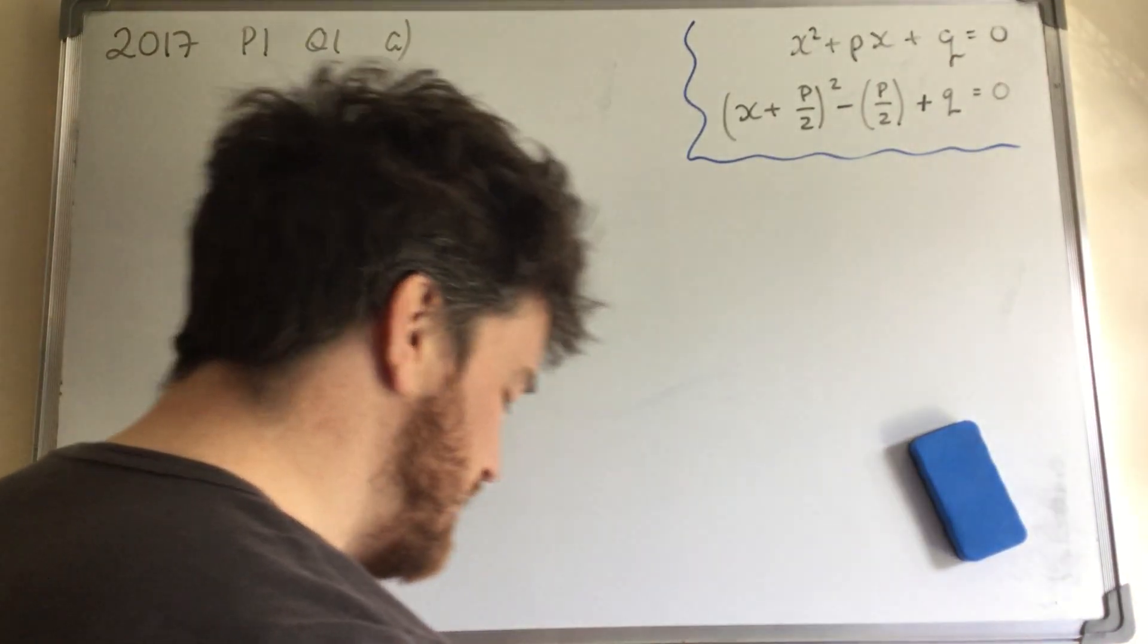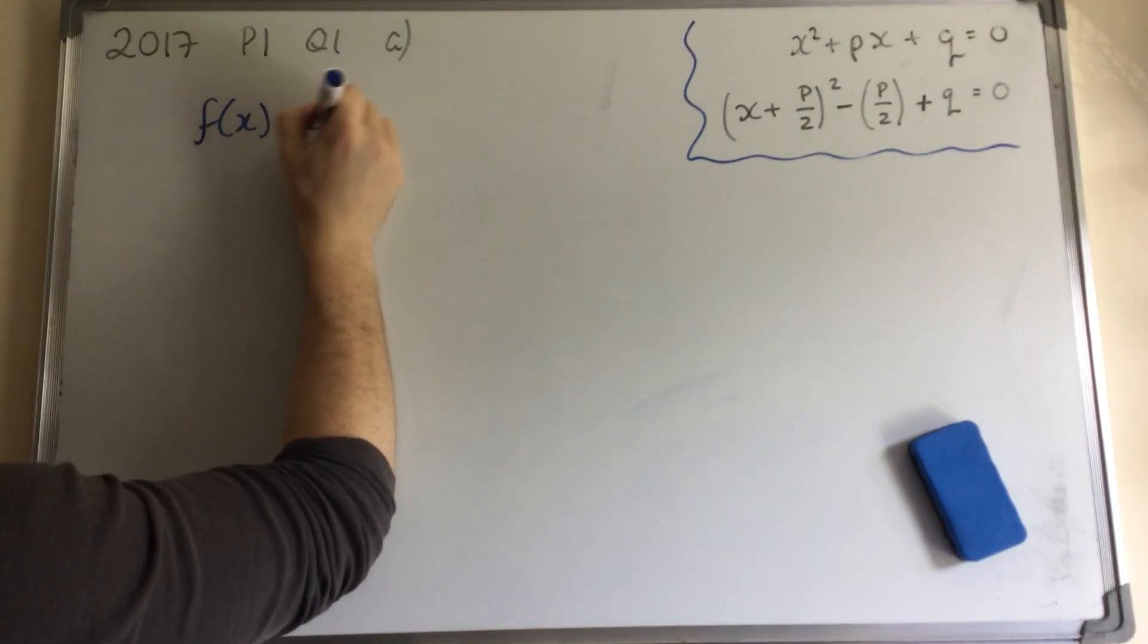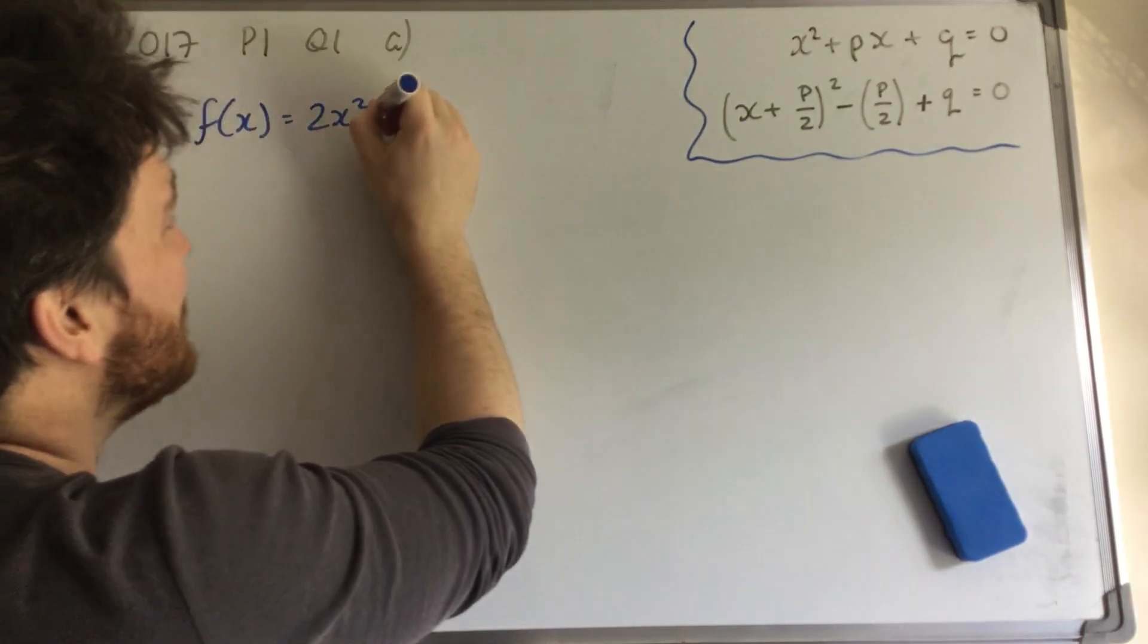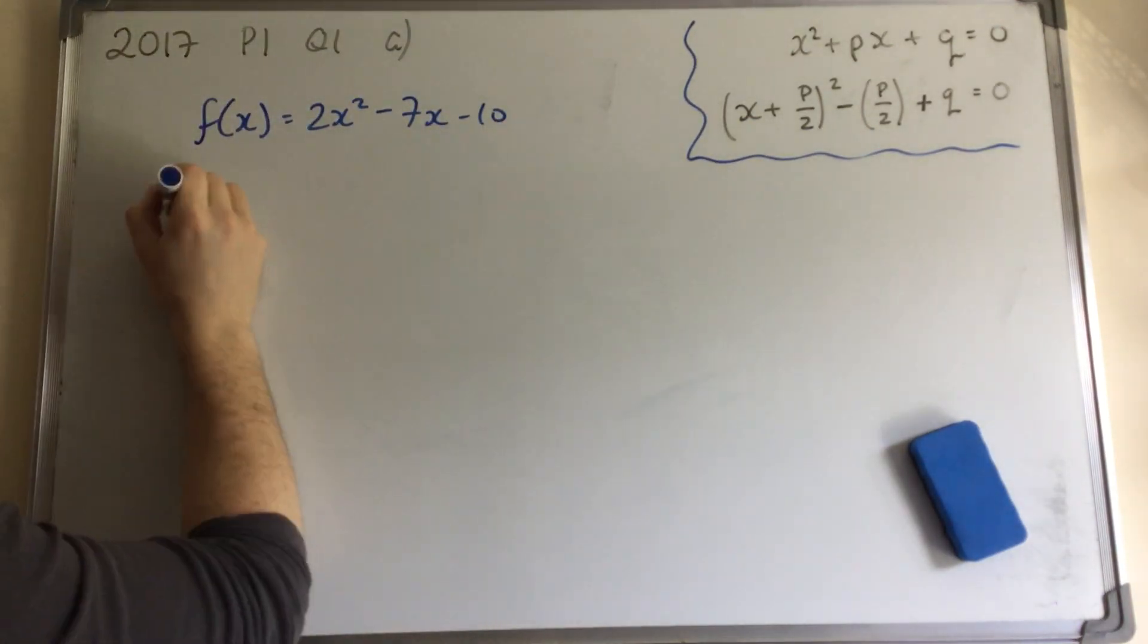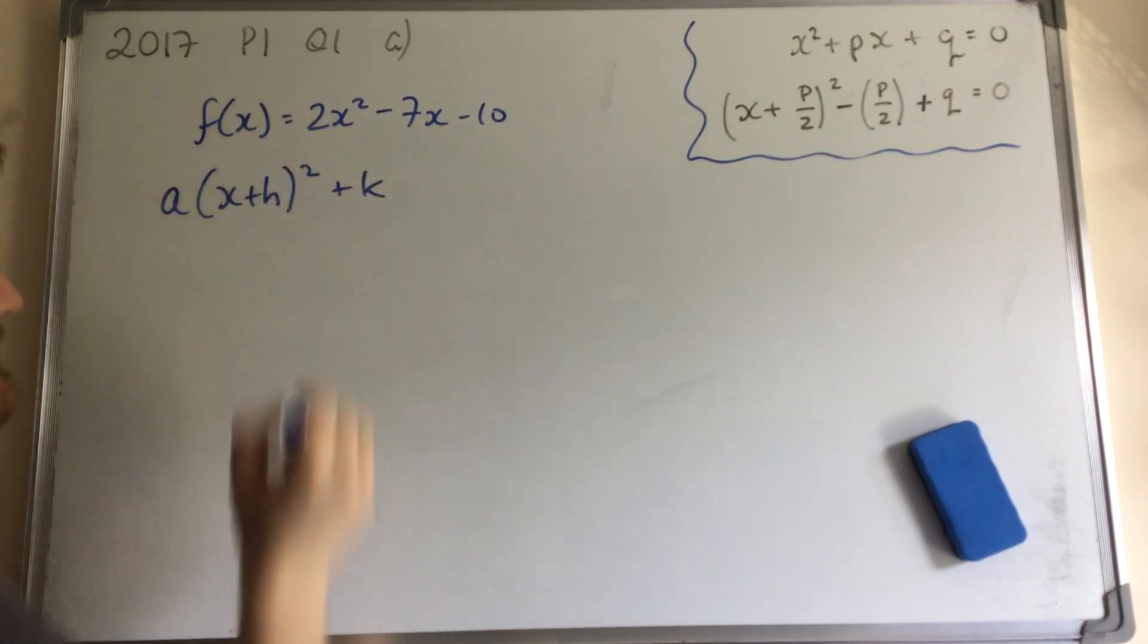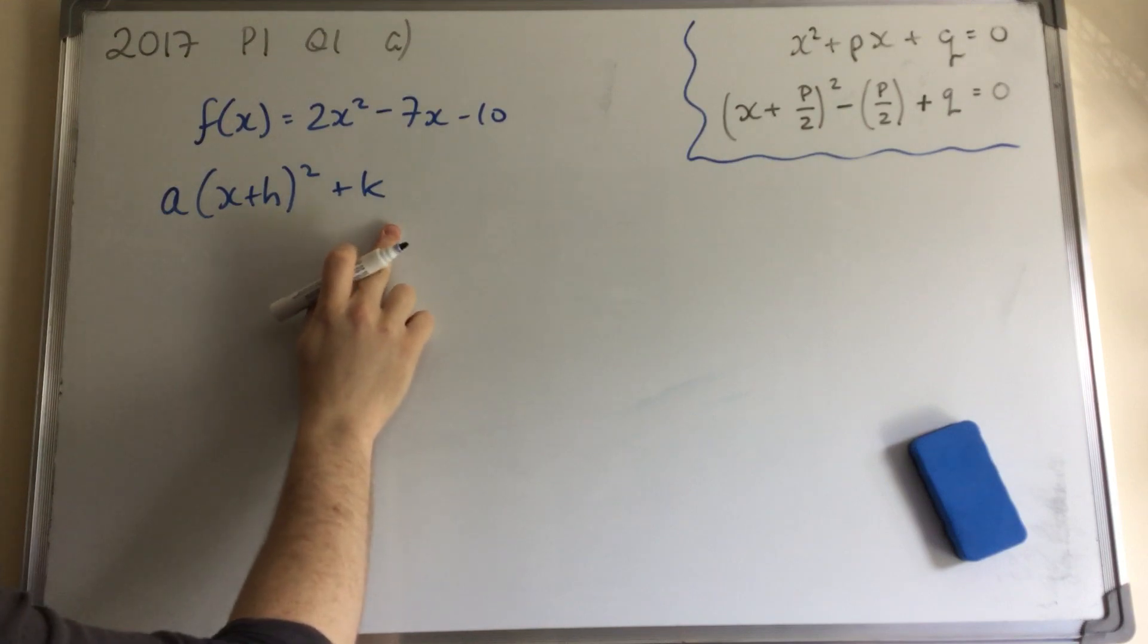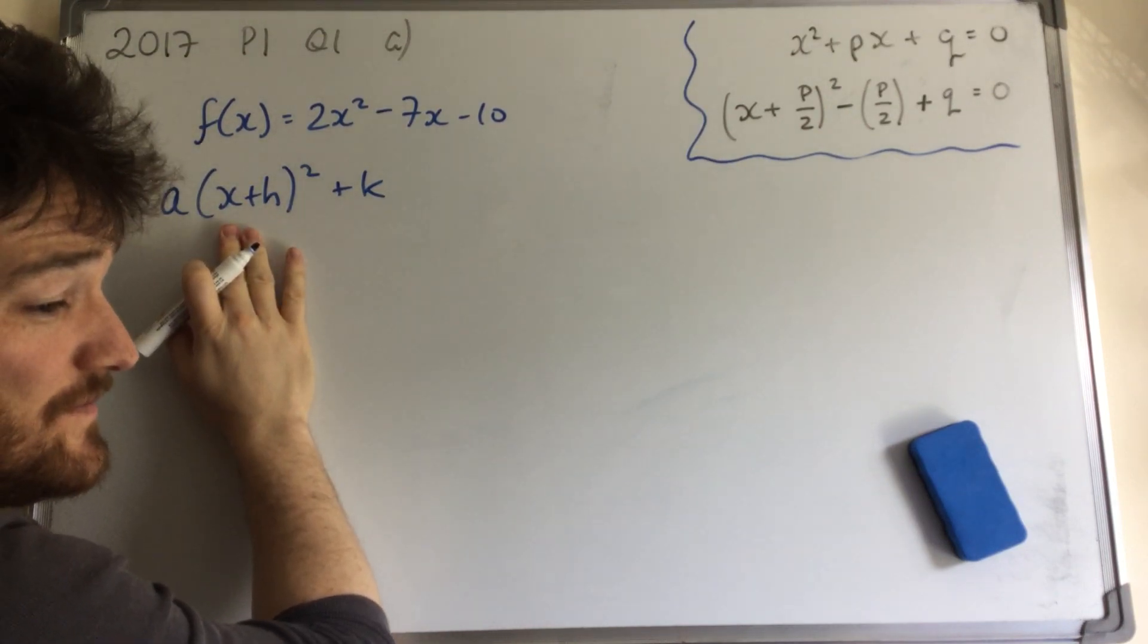And they've asked, write the function f of x equals 2x squared minus 7x minus 10. And they want to write it in the form a by x plus h squared plus k. So what we want to recognize first off is that this form here is completing the square.